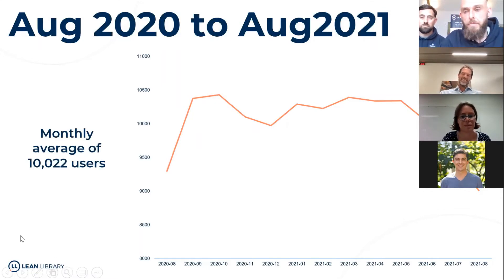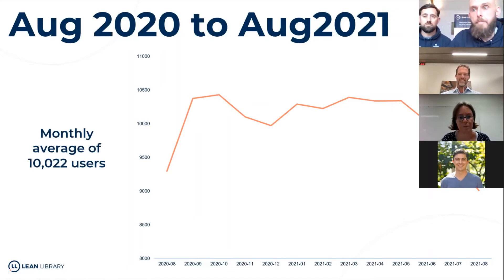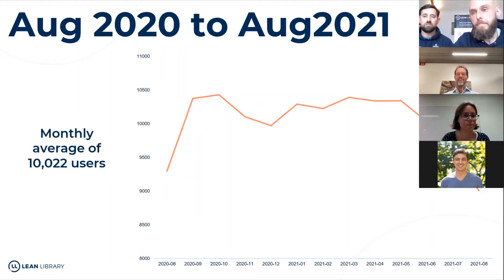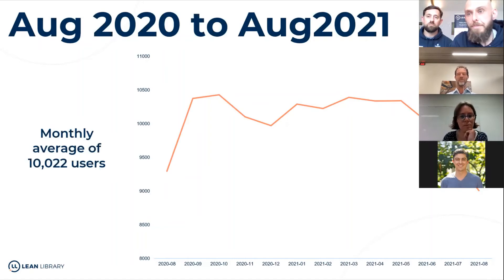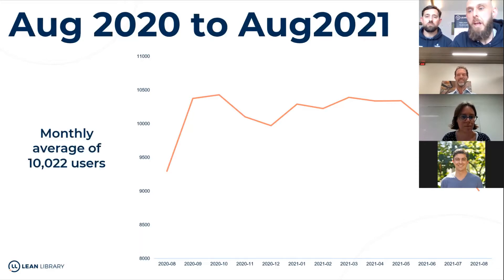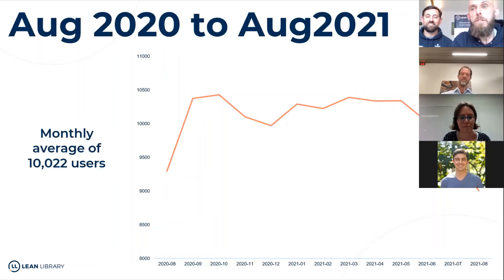The most heavily used period is the midst of the study year — September to June. Usage is dropping now because August was the last month measured here, but our statistics are climbing up already because of September. We now have 8,826 users and we're climbing back up to hopefully 10,000 again — and hopefully a bit more. Fingers crossed.